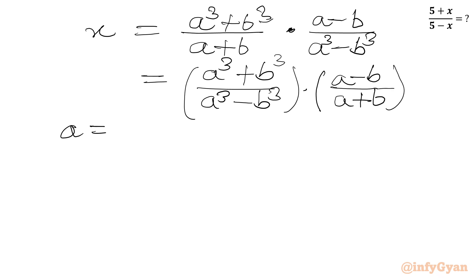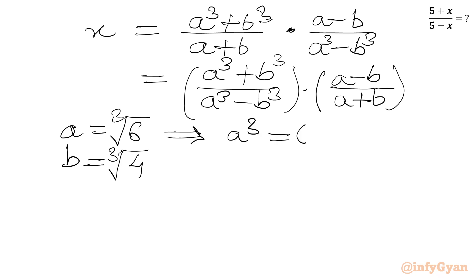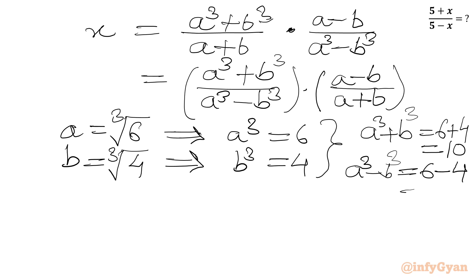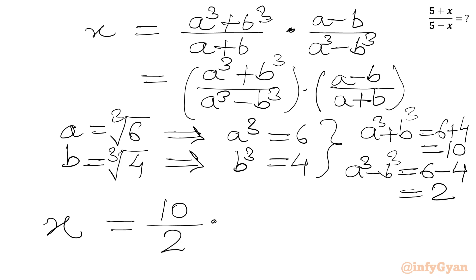Recalling that a was cube root 6 and b was cube root 4, we have a cubed equals 6 and b cubed equals 4. So a cubed plus b cubed equals 10, and a cubed minus b cubed equals 2. Substituting, x equals 10 over 2 times (a minus b) over (a plus b). We can cancel 10 by 2 to get 5, so x equals 5 times (a minus b) over (a plus b).